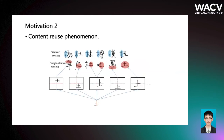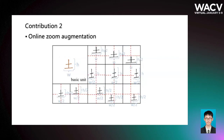For the second point, there is an important property in Chinese characters: the content reuse phenomenon — the same radicals may appear in various characters at various locations. To utilize this property, we propose online augmentation. Specifically, when a paired image x and y is fed into the model, we zoom the center character region to change the aspect ratio, then translate the zoomed character region horizontally or vertically. Essentially, the augmented training samples guide the network to learn a variety of location patterns.